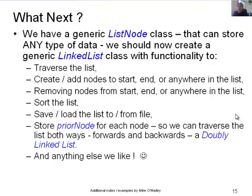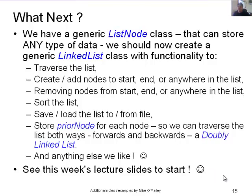Now that we have a generic ListNode class, the next step is to create a generic LinkedList class. This class will have functionality to traverse the list, add nodes at the start, end, or anywhere in the list, remove nodes, sort the list, and save or load the list to/from file. We could also extend ListNode to store a prior node reference, giving us a doubly linked list. The week's lecture slides make a start on adding this functionality.